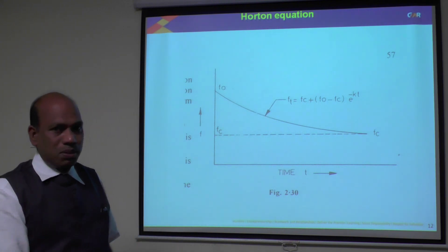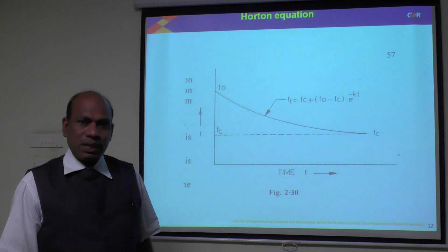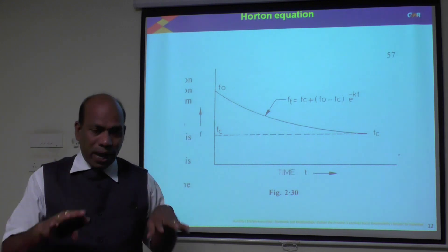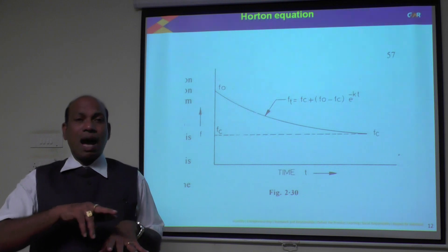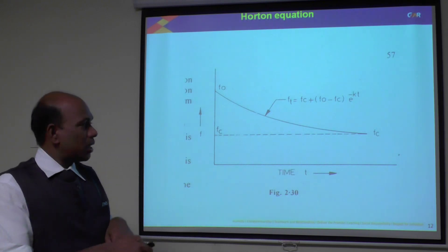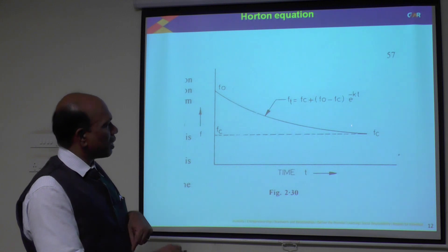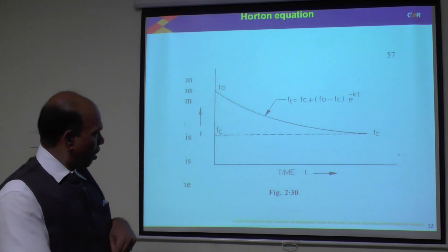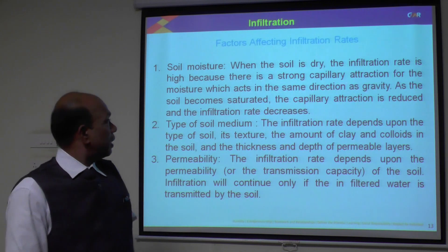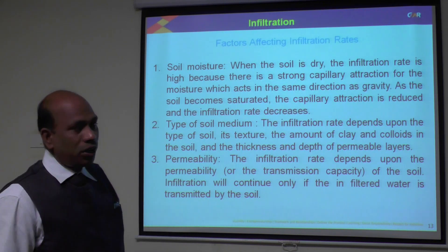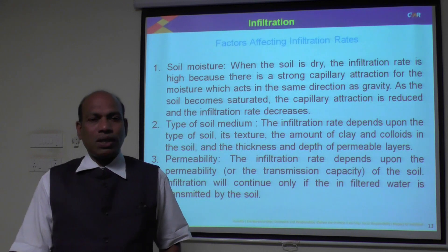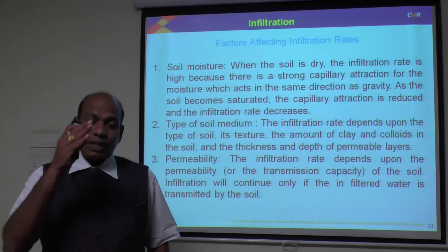The phi index and W index are also known as infiltration capacity of the soil, but they represent the average infiltration capacity. Whereas Horton's equation gives the high initial infiltration rate and the limiting rate, the phi and W indexes give the average infiltration capacity. Now we discuss the factors affecting the infiltration capacity of the soil. The first factor is soil moisture — when the soil is in a dry state, the infiltration rate is very high because there is no water in the soil. Once rain starts, the infiltration rate gradually reduces as the soil becomes saturated.